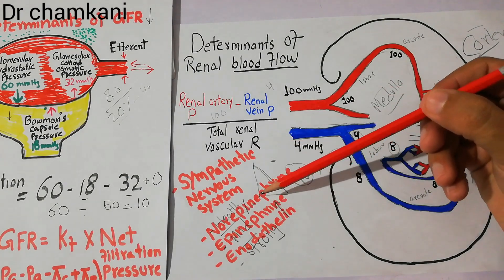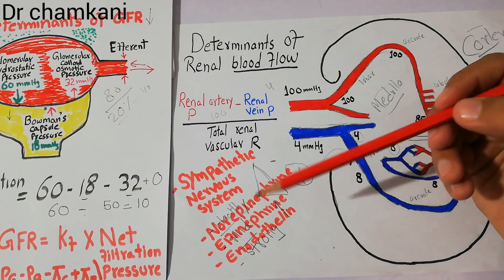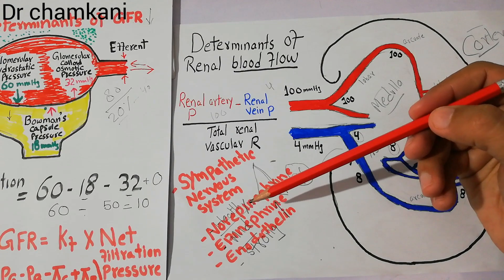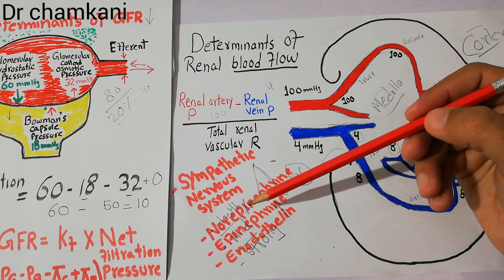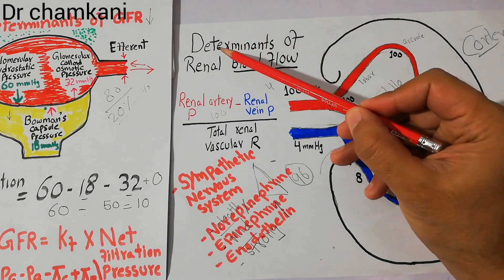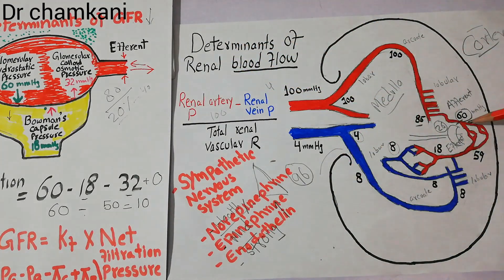The rise in the level of blood norepinephrine and epinephrine goes hand in hand with sympathetic activation. Both these hormones increase the constriction of the afferent arteriole and efferent arteriole, hence decreasing the blood flow to the glomerular capillaries, acting as an important determinant of renal blood flow. Once blood flow to the glomerular capillaries has been decreased, the GFR decreases.